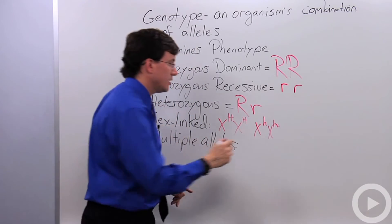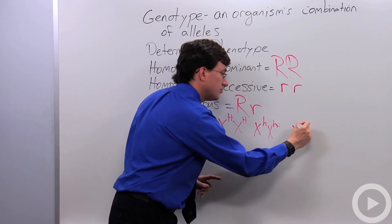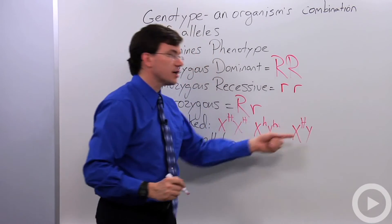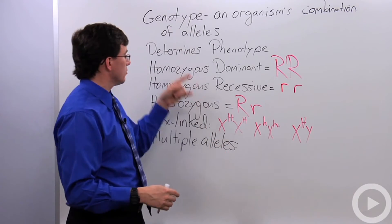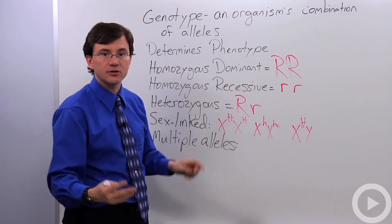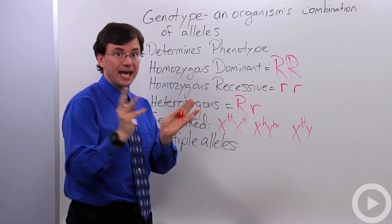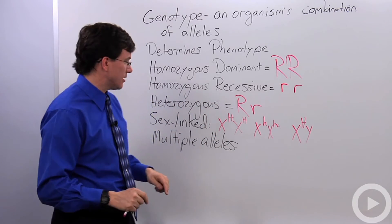Males on the other hand, because they only have one X chromosome and a Y, they can only have one copy. So their genotype, instead of being called homozygous or heterozygous or whatever, it's called hemizygous. Hemi meaning half. So only half of the chromosomes came together in that case.